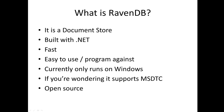RavenDB is a NoSQL database. It is a document store. It's built in .NET. It's fast, easy to use — which I'll hopefully demonstrate today — easy to program against. And it can be summarized as sort of no impedance mismatch: .NET objects in, .NET objects out.